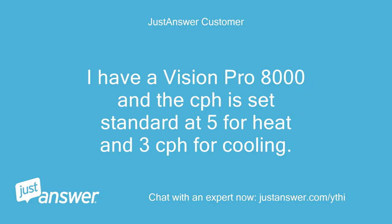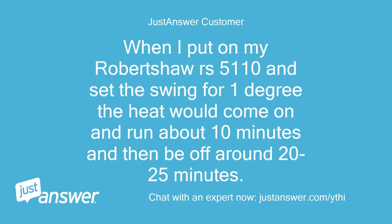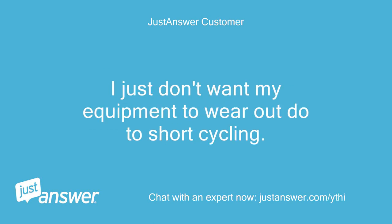I have a Vision Pro 8000 and the CPH is set standard at 5 for heat and 3 CPH for cooling. When it is cold and the heat comes on it runs for about 4 to 8 minutes and is off for about 8 to 12 minutes and runs accordingly. When I put on my Robert Shaw RS5110 and set the swing for 1 degree, the heat would come on and run about 10 minutes and then be off around 20 to 25 minutes — all at the same set point of 68 on both thermostats. I just don't want my equipment to wear out due to short cycling.